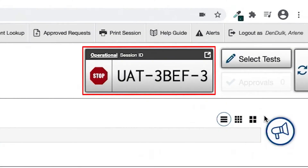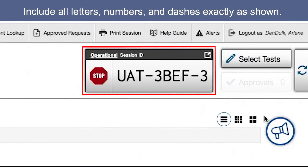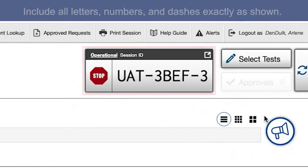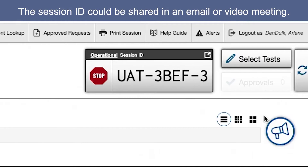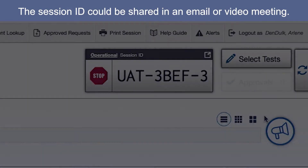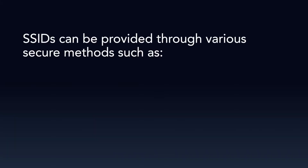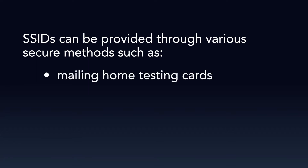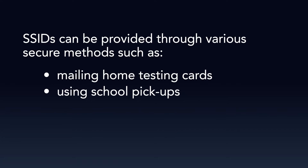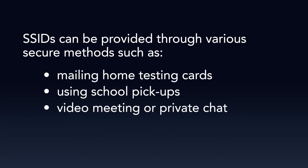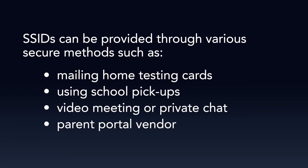Provide students the session ID, including all the letters, numbers, and dashes exactly as shown. The session ID could be shared with students in an email or during a video meeting prior to testing. SSIDs can be provided through various secure methods such as mailing home testing cards or using school pickups. Teachers can meet with students in a video meeting to share or private chat the SSID to each student. If you have a parent portal vendor, SSIDs may be available to students that way too.